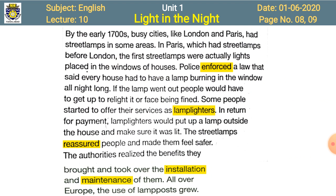By the early 1700s, busy cities like London and Paris had street lamps in some areas. In Paris, which had street lamps before London, the first street lamps were actually lights placed in the windows of houses. Police enforced a law — 'enforced' means to implement or apply — that said every house had to have a lamp burning in the window all night long.